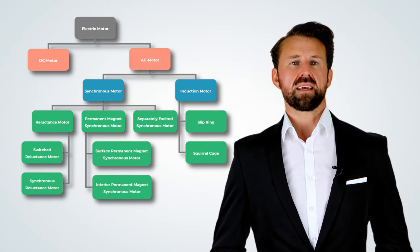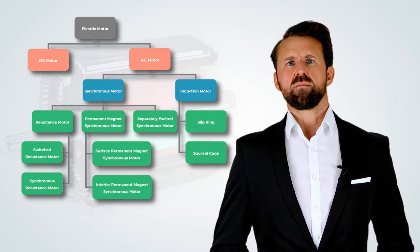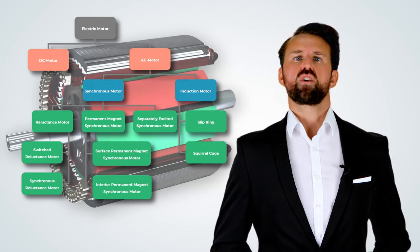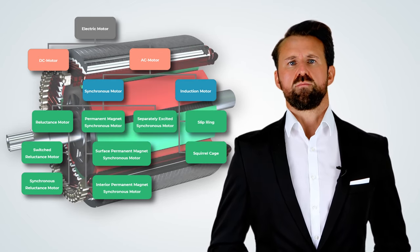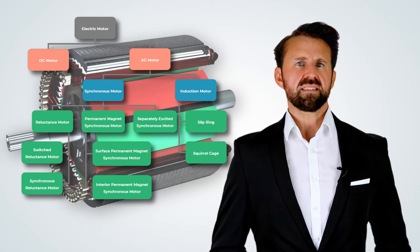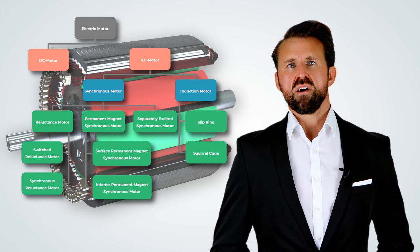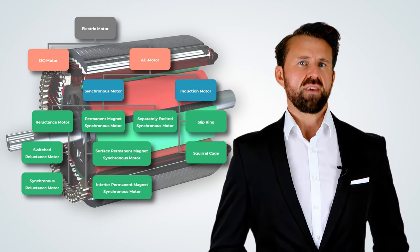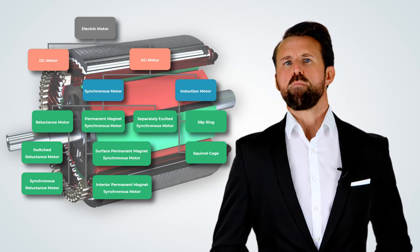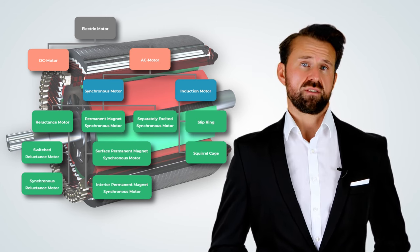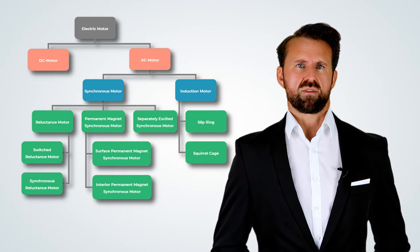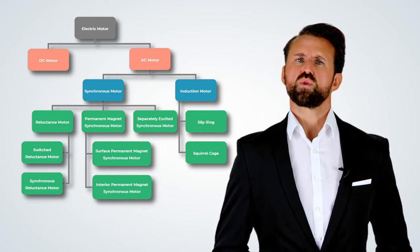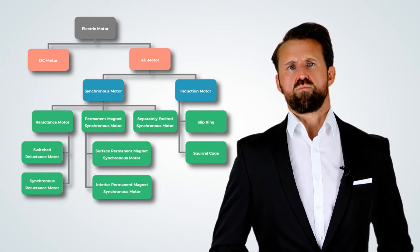Electrical motors can be divided into DC motors and AC motors. Since AC motors do not require mechanical commutators, they have a much longer lifetime compared to DC motors. This is why AC motors are primarily used for electrical vehicles — they also have a higher power density and higher efficiency. Therefore, we want to take a closer look at AC motors today, which can be divided into synchronous motors and induction motors.